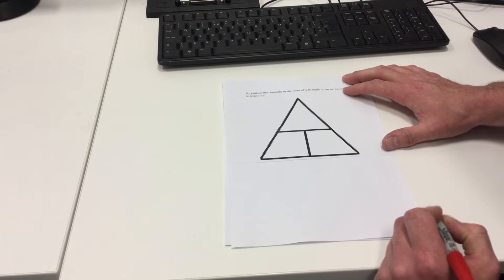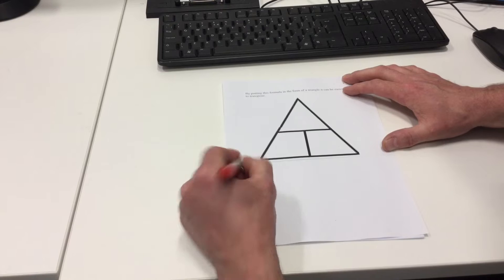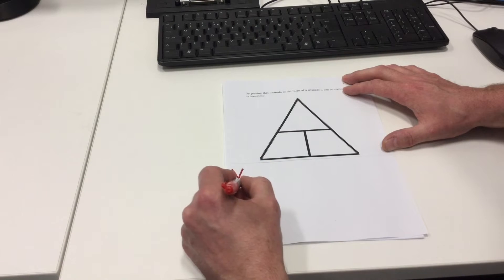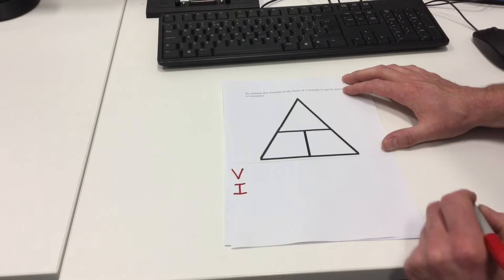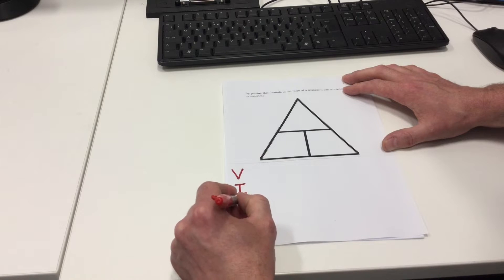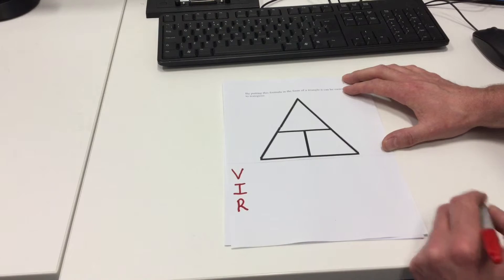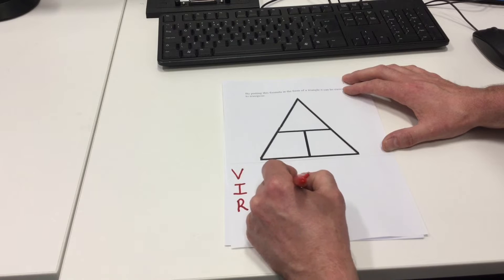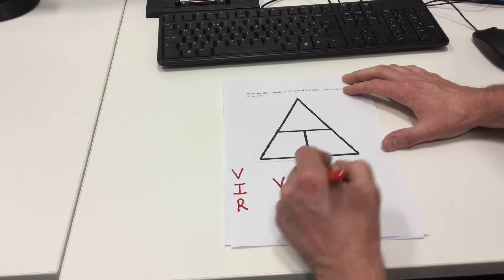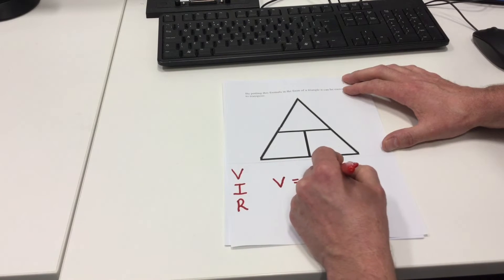For our basic Ohm's law formula we're going to use uppercase V to represent voltage, uppercase I to represent current, uppercase R to represent resistance. Ohm's law formula would read voltage is equal to current multiplied by resistance.